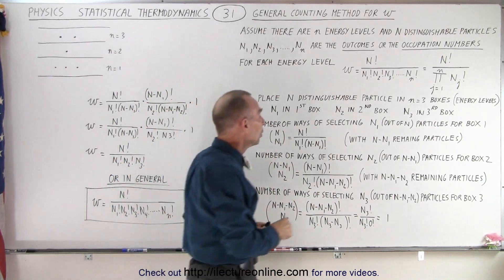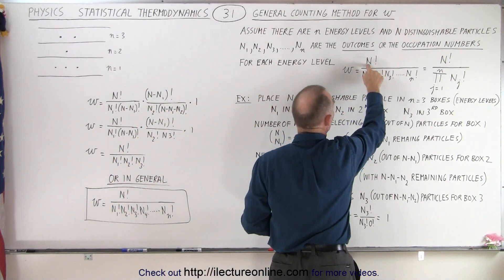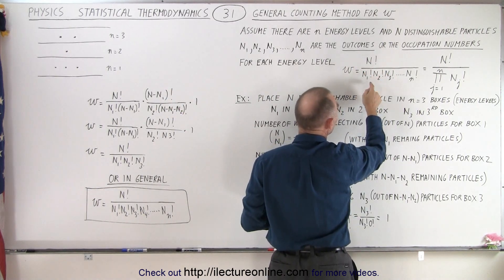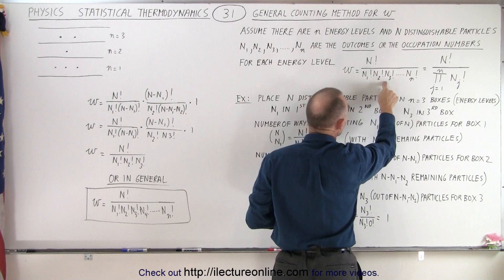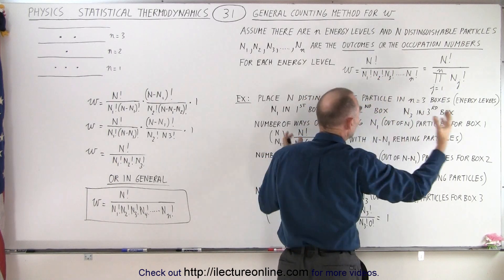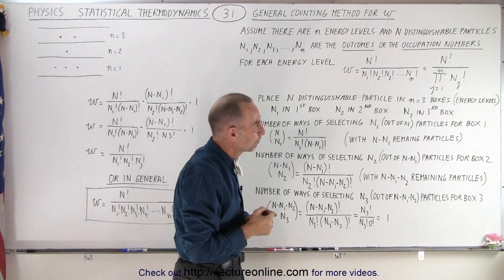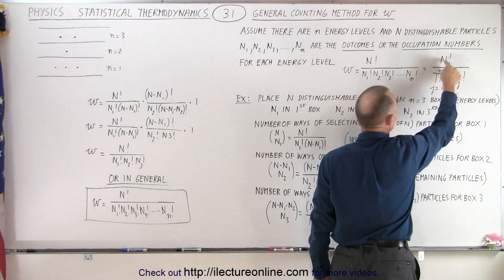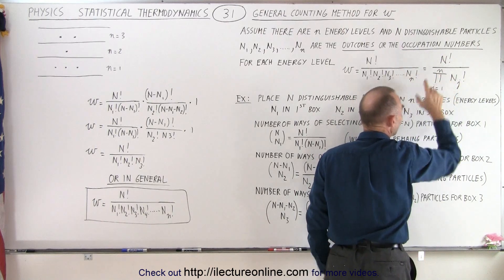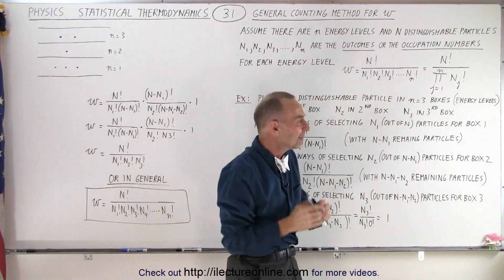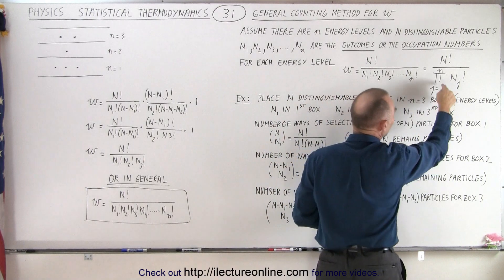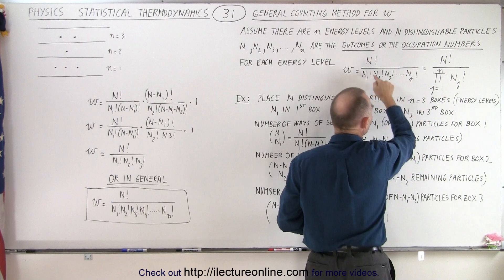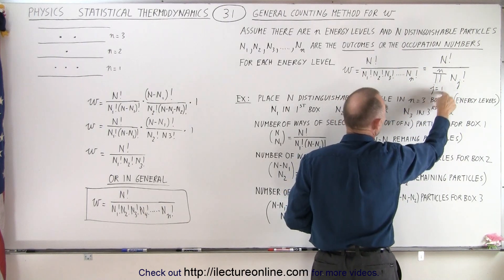For each energy level, we're going to take the total number of particles — if we have six, we call it six factorial — and then we divide that by the number of particles in each level factorial, all multiplied together in the denominator. So the numerator always comes out to be the total number of particles factorial, divided by this capital pi symbol — meaning not summation but multiplication — of all the various nj factorials, from j equals one to n.